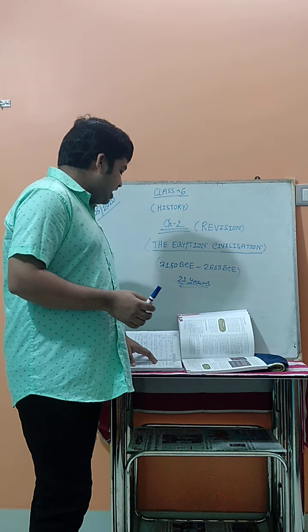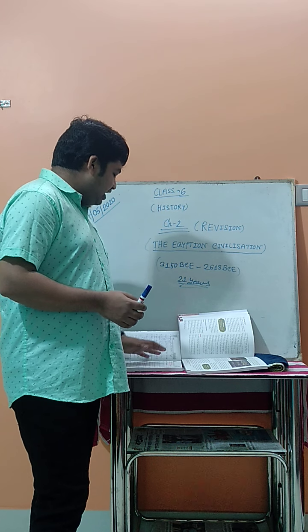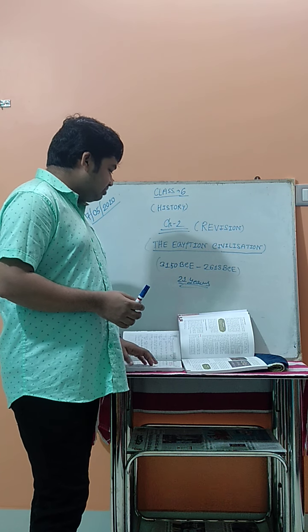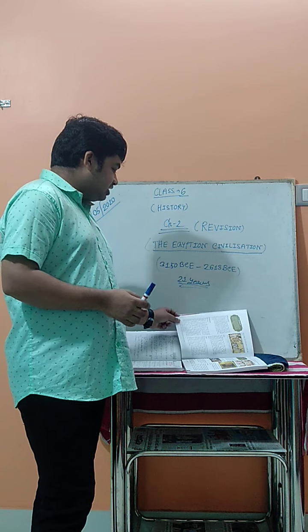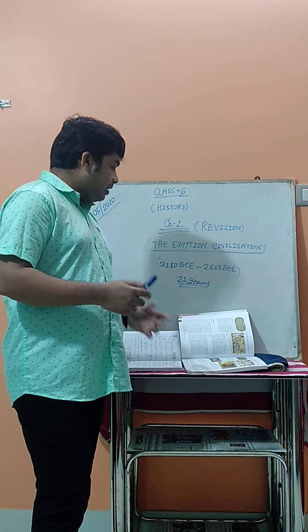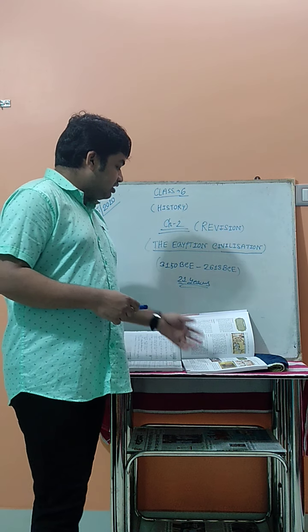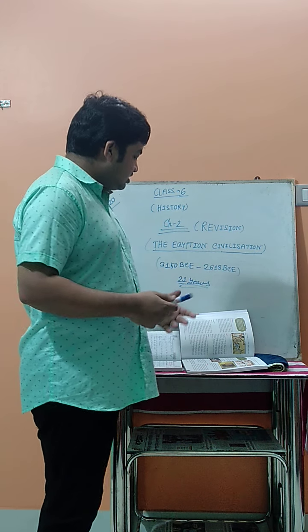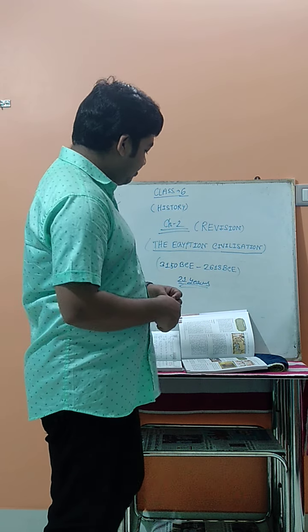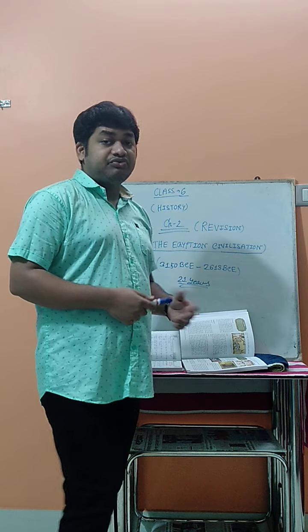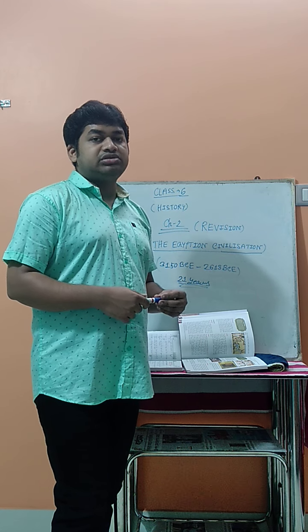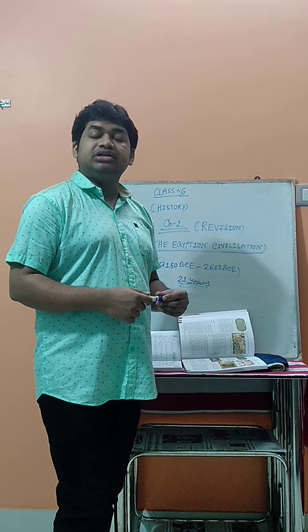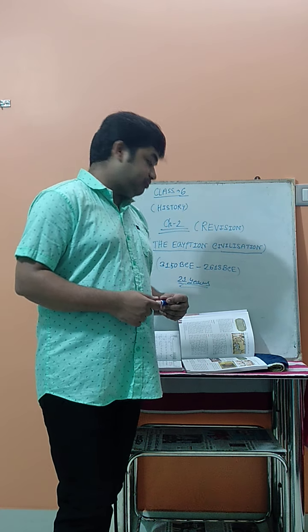The next question is: write a few agriculture crops cultivated in the Egyptian civilization. The important crops cultivated were barley, millet, and flax. These are the very important crops that were cultivated in the Egyptian civilization.